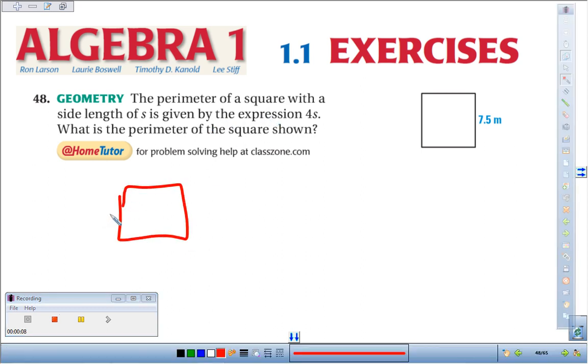If we had a square and we had a side length of s, a square, all sides are equal. So this side would be s, and this side would be s, and this side would be s.